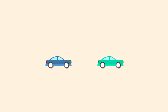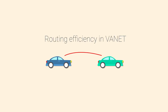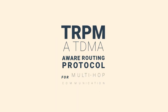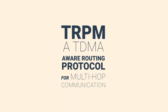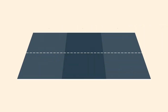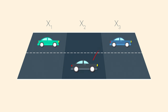Then, in order to ensure that event-driven safety messages can be sent over a long distance, we proposed TRPM, a TDMA-aware routing protocol for multi-hop communication. Our routing scheme is based on a cross-layer approach between the MAC and the routing layers, in which the intermediate vehicles are selected using TDMA scheduling information.